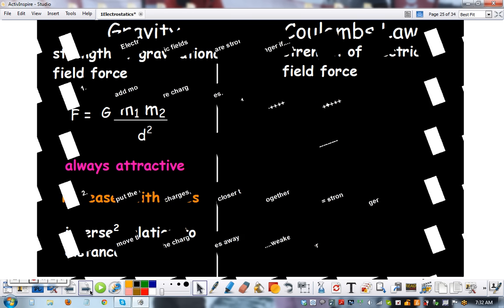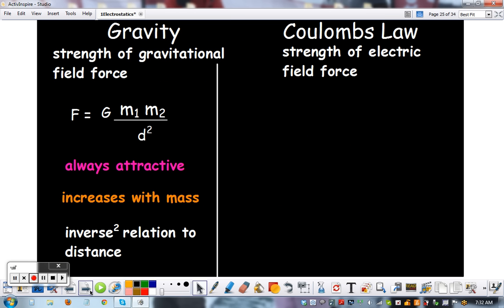So it's actually super similar. We have this formula for gravity. The formula looks like this: the mass of one object times the mass of two objects divided by the distance between, times this constant. Gravity is always attractive, it increases with mass, and it's inverse squared relation to distance.